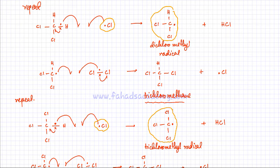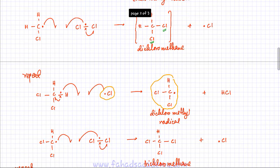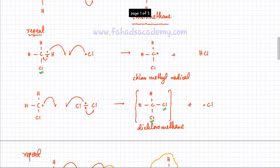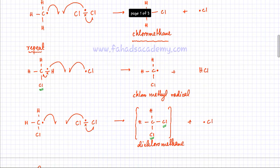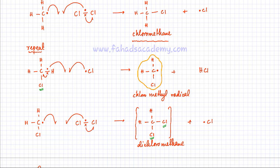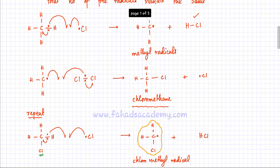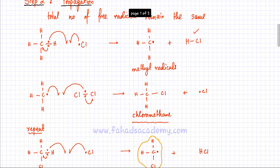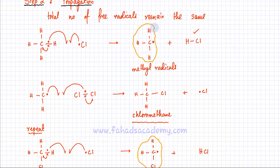Let's find more free radicals: here is a chloromethyl radical, and here is your methyl radical, so you have all these radicals. We are talking about free radical substitution of methane, and I have pointed out a few free radicals.